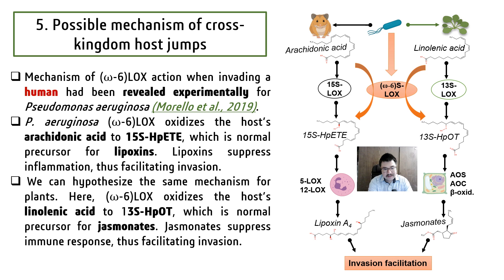The volumes of lipoxygenases of human-associated and plant-associated bacteria correspond to omega-6 lipoxygenase activity. We have literature data on Pseudomonas aeruginosa: this pathogen uses lipoxygenase to synthesize hydroperoxides that are normal precursors of lipoxins. Lipoxins suppress inflammation and facilitate bacterial invasion. We hypothesize that the same mechanism works in plants — omega-6 lipoxygenases convert the host's linoleic acid to hydroperoxides that are precursors of jasmonates, and jasmonates facilitate invasion, like lipoxins in human organisms.